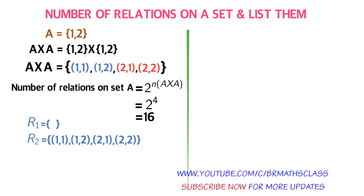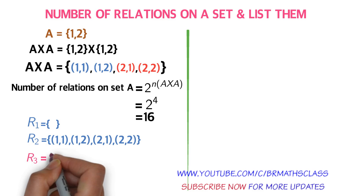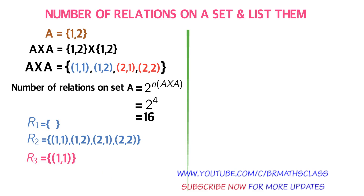So R1 and R2 are two relations listed. The empty set is a subset of every set, so R1 is a relation on A. Every set is a subset of itself, so R2 taken as A×A is also a relation on A. Now I'll take all subsets having a single element.